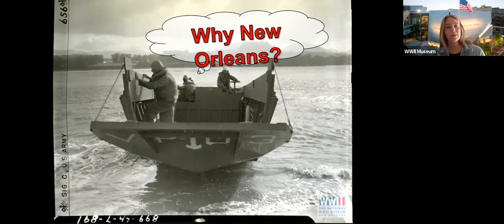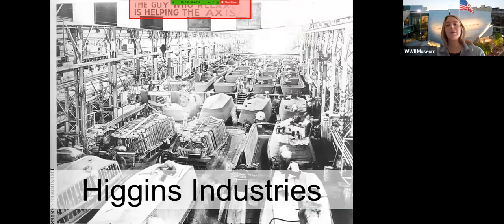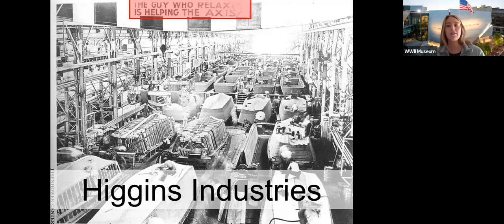The answer has to do with the boat on the screen. In World War II, boats were really important — specifically boats built by Higgins Industries, which happens to be in New Orleans. This is a photo of a Higgins Industries plant in New Orleans in the 1940s. It's an assembly line of boats being turned out — actually 20,000 boats. There's a sign highlighting the fact that even though you may not have been overseas fighting as a soldier, you were doing your part by helping to build these boats.